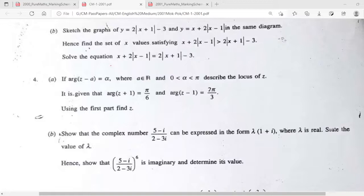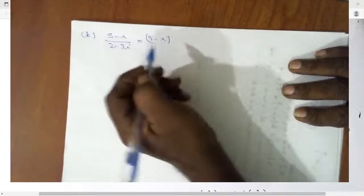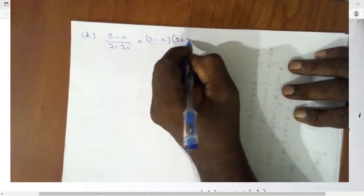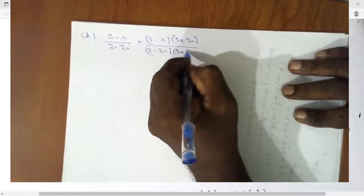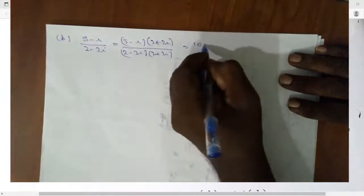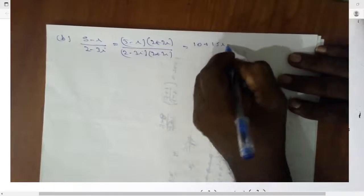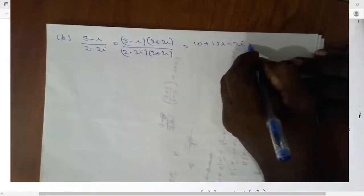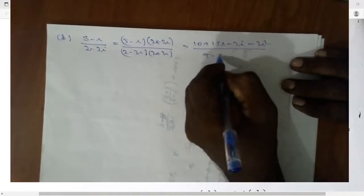If you come to part B, you have to simplify 5 minus i over 2 minus 3i. So, 5 minus i, 2 plus 3i, 2 minus 3i, 2 plus 3i. This equals 10 plus 15i minus 2i minus 3i squared over 4 minus 9i squared.